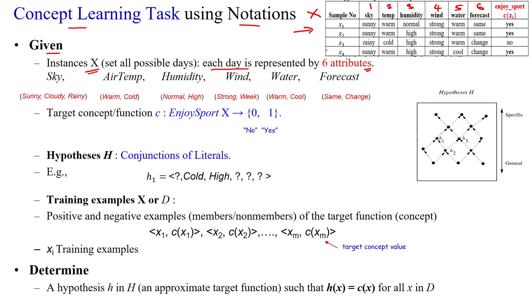We have to learn, that means the learning system should learn the patterns or values given in the training samples to know the target concept yes or no. That means on that particular day can we play the game or not. So here the sky have three different values: cloudy, sunny, and rainy.